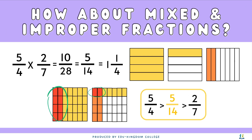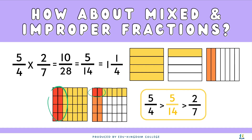How about when we have mixed fractions and improper fractions? You may have noticed that in the last question, 5 over 4 times 2 over 7, the result is bigger than one of the fractions and smaller than the other. Visually, 5 over 4 is coloured in yellow and 2 over 7 in orange. I need to apply 2 over 7 to both boxes in yellow, giving two overlapping parts with a total of 5 over 14. This tells us that multiplying proper fractions always gives a smaller fraction, but this does not fully apply with improper or mixed fractions.